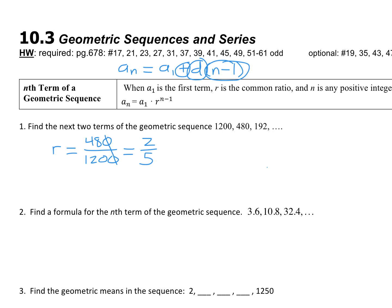Now we just keep multiplying by two-fifths. 192 times 2 is 384, and we have a 5 underneath. Then 384 times 2 is 768, and the bottom becomes 25.